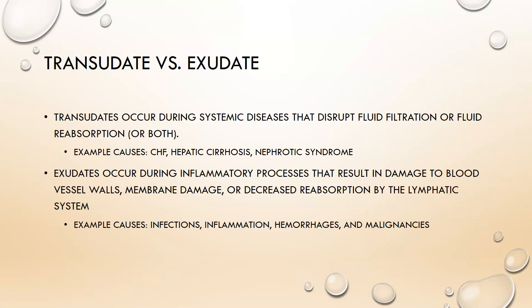Transudates versus exudates: transudates occur during systemic diseases that disrupt fluid filtration, fluid reabsorption, or both. Example causes are congestive heart failure, hepatic cirrhosis, and nephrotic syndromes. Exudates occur during inflammatory processes that result in damage to blood vessel walls, membrane damage, or decreased reabsorption by the lymphatic system. Example causes include infections, inflammations, hemorrhages, and malignancies.